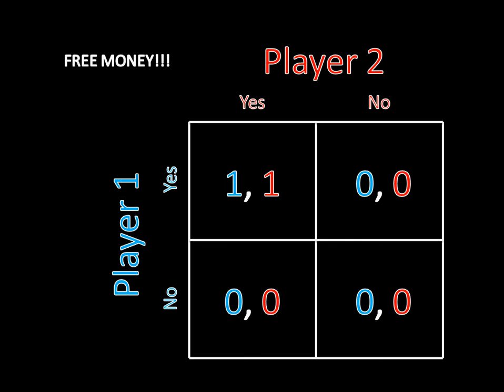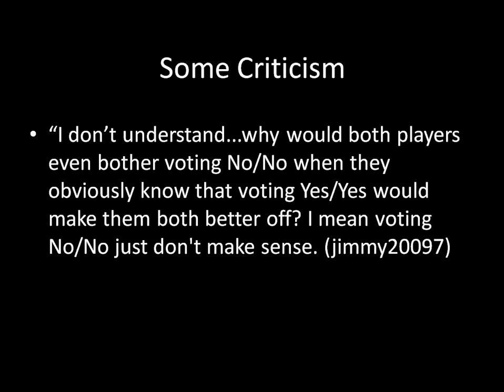Now looking at this game, there's some obvious reason for confusion and puzzlement in that while definitionally — remember Nash equilibrium is simply an application of a definition — definitionally there are two Nash equilibria here, but we might only expect one equilibrium to be played in practice, that yes-yes equilibrium. And to give a voice to that, I want to quote a YouTube user, Jimmy20097, who said: I don't understand why both players would even bother voting no-no when they could obviously know that voting yes-yes would make them both better off. I mean, voting no-no just doesn't make sense.